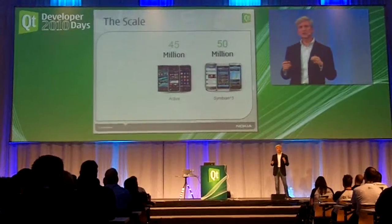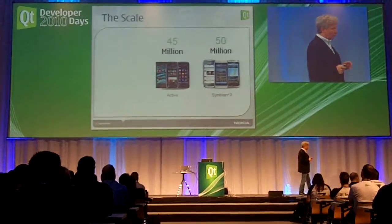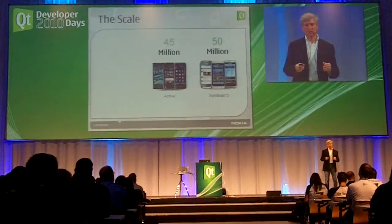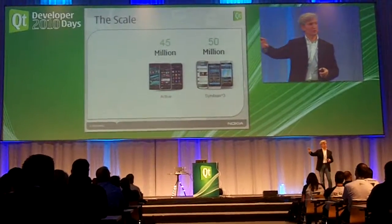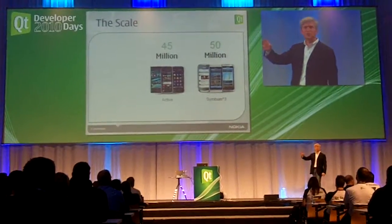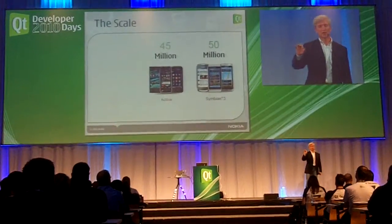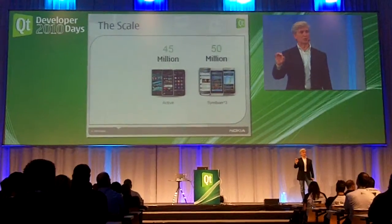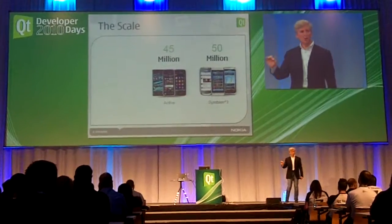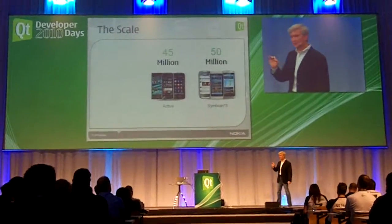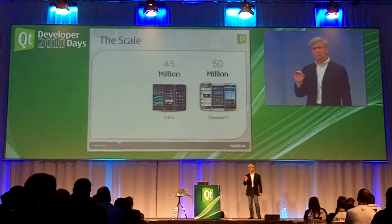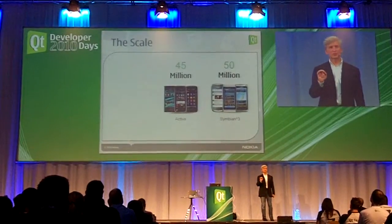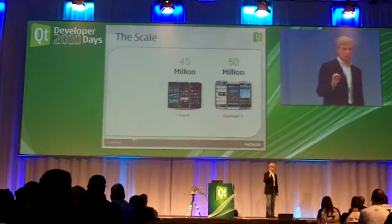Loosely, our definition of active devices are devices in which the customer, the owner of that device, has contacted our services — our OV services platform — at least once per month. The key is 45 million devices, 45 million customers, that phone home — and I mean that from a data plan perspective, not literally — often allowing you to reach them with new applications that you create in QML and upload to the OV store.